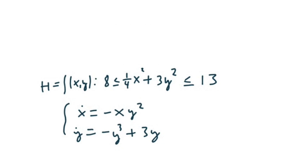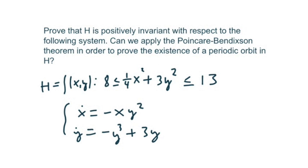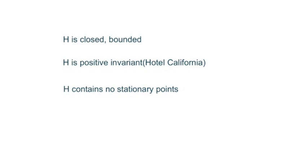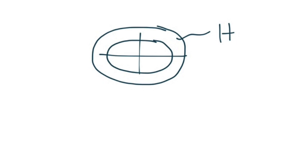So what it's asking you to investigate is are there any periodic orbits in there and is it positively invariant. So we have to first understand what positively invariant means. It's really pretty simple. Look here. These are some things that have to be true for Bendixson. But the second one is H is positive invariant. And I have Hotel California written.